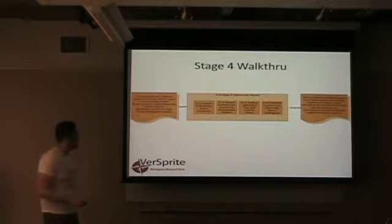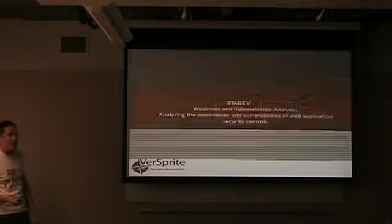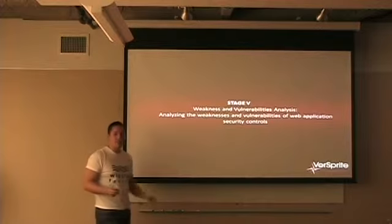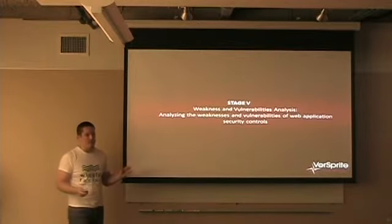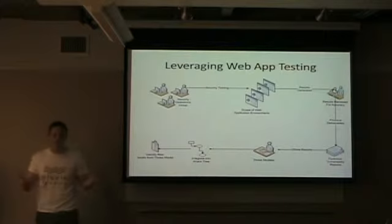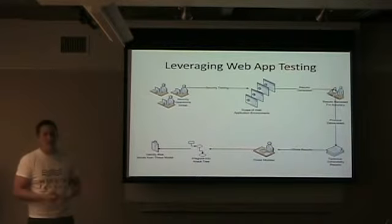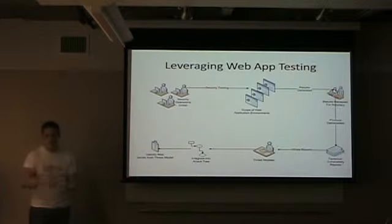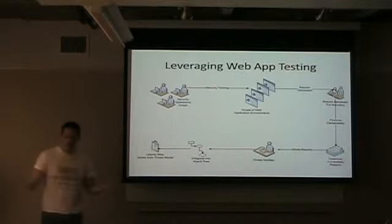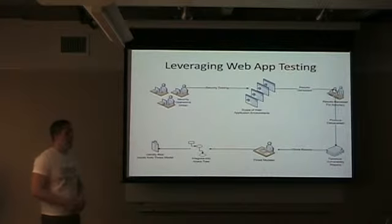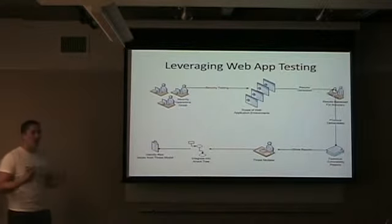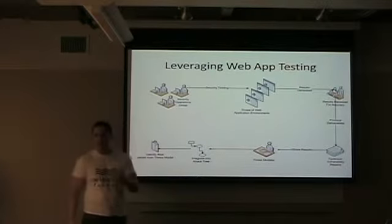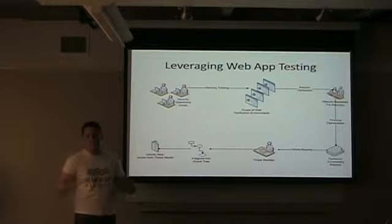Stage five is weakness and vulnerability analysis — this will be the easiest step because it's vulnerability detection and weakness enumeration. We've got all the tools in the world. As threat modelers, we extend an olive branch to the SOC and vulnerability detectors and say, 'I need your help. I can't understand the vulnerability of my app unless I get your help.'